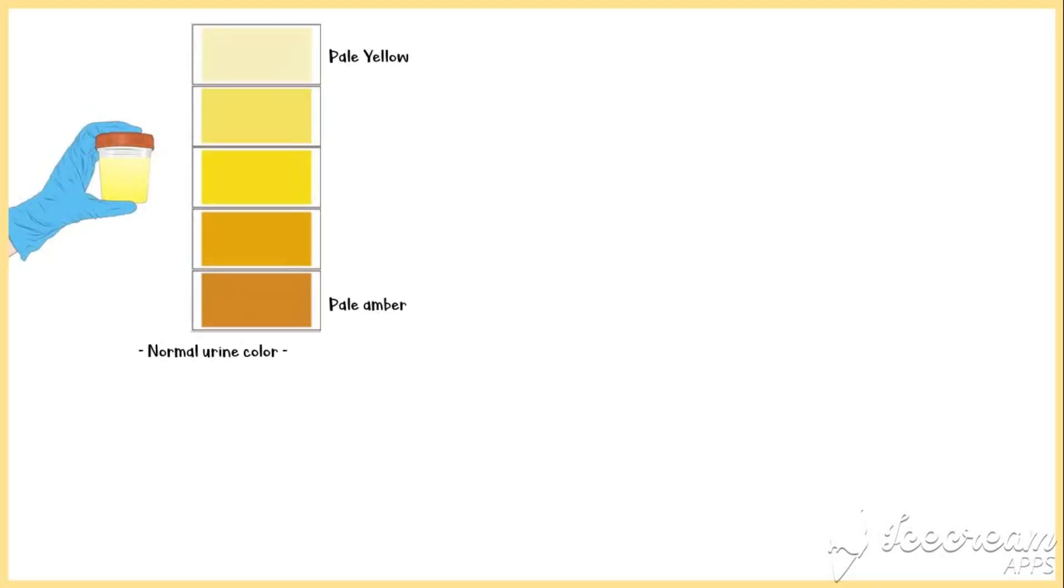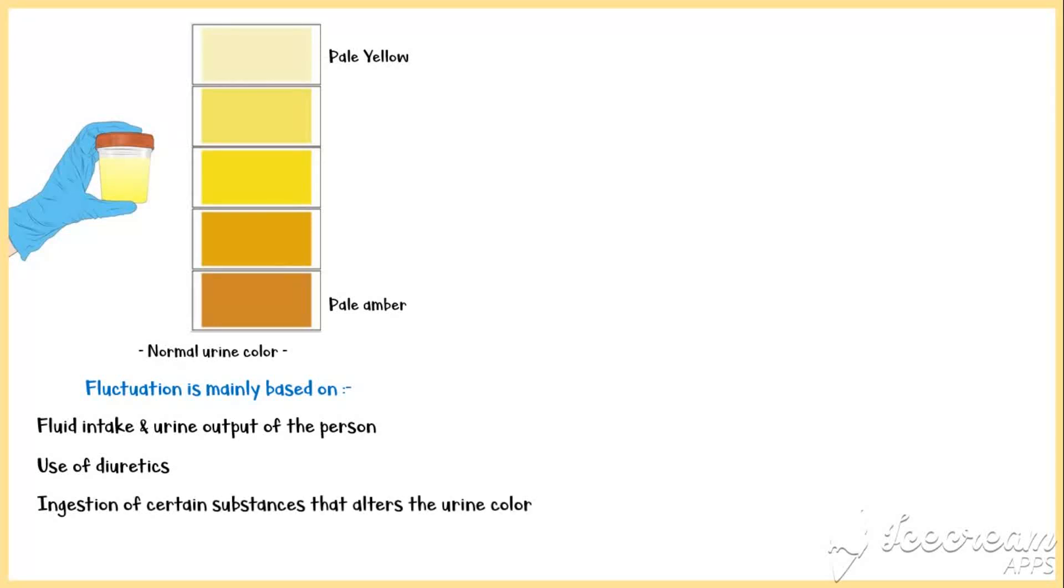Normal urine color ranges from pale yellow to pale amber in different individuals. This fluctuation of normal urine color is mainly based on the fluid intake and urine output of the individual, use of diuretics, and ingestion of certain substances that alter the color of urine.